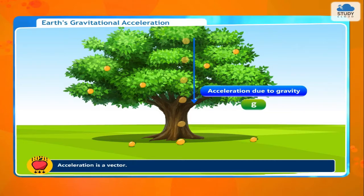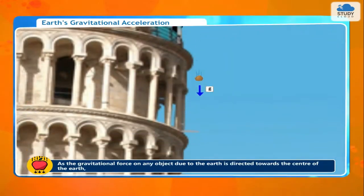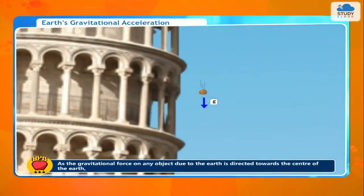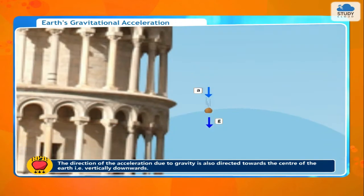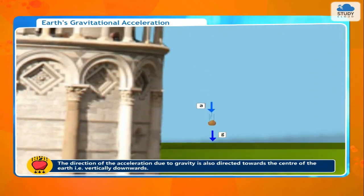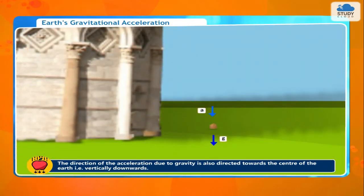Acceleration is a vector. The gravitational force on any object due to the Earth is directed towards the center of the Earth. Therefore, the direction of the acceleration due to gravity is also directed towards the center of the Earth, that is, vertically downwards.